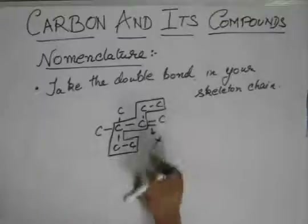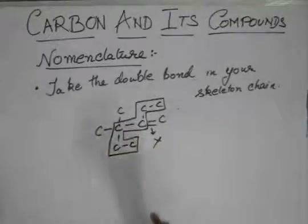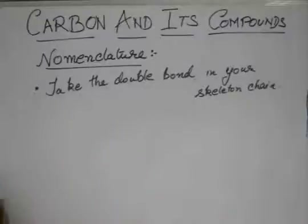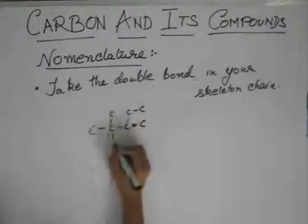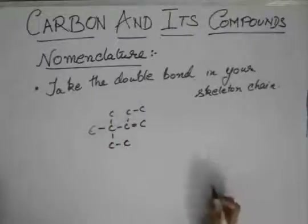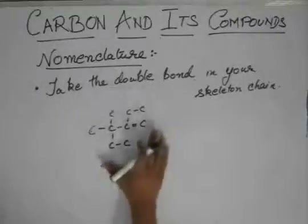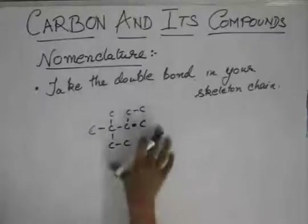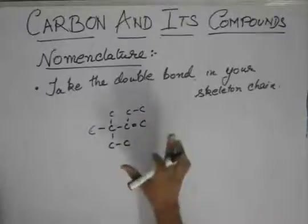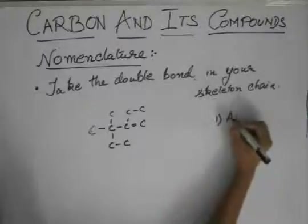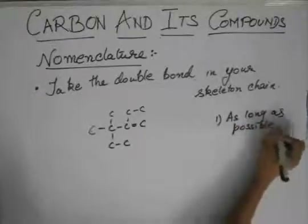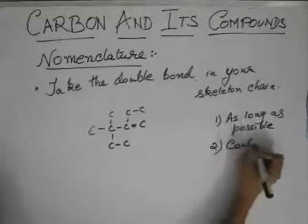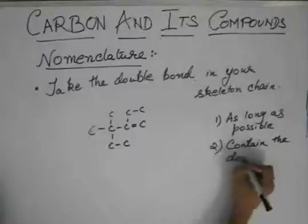We have to take the double bond inside the skeleton chain — the chain which we are numbering. We try to form the longest chain, but it must be the chain which is longest and which also contains the double bond. It should satisfy both conditions.